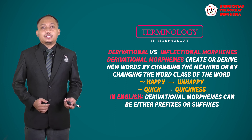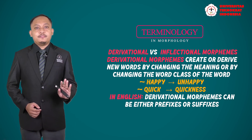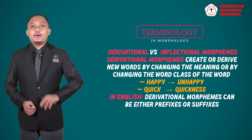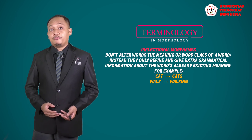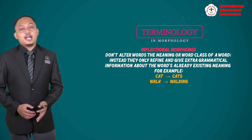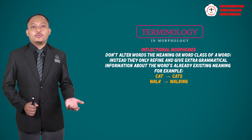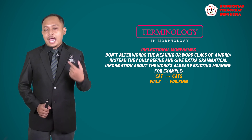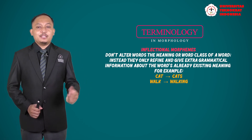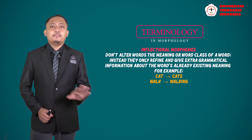Another example is 'unhappy': 'happy' is an adjective meaning you are glad, but 'unhappy' is the opposite — so it changes the meaning. Meanwhile, inflectional morphemes do not change the meaning but change the grammatical function. For example, 'camera' — when we add the suffix '-s,' it becomes 'cameras,' changing from singular to plural; the meaning is actually the same.